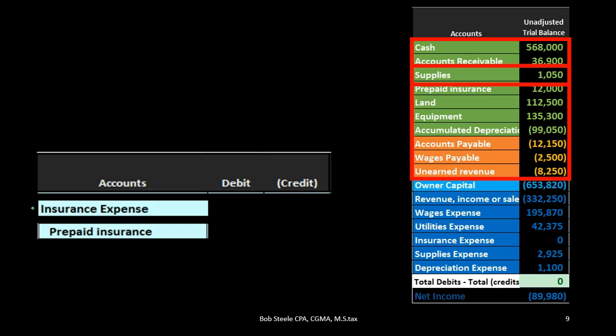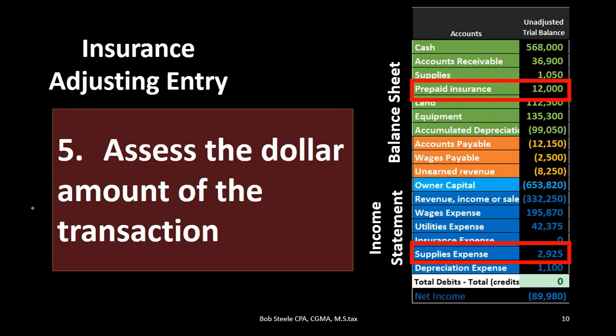Steps one through four get us to the point where we know the two accounts, which one is going to be debited, and which one is going to be credited. The only thing we do not know is the dollar amount — that of course is step five: assess the dollar amount of the transaction. That step will depend on the specific adjusting journal entry and will need to be looked at on a case-by-case basis. Even when a problem only asks for the dollar amount, you want to go through steps one through four because that'll give you a clue as to how to find the dollar amount.